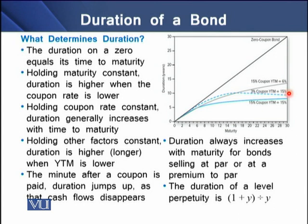Holding other factors constant, duration is higher when YTM is lower, as seen in the diagram where the bond with 6% YTM has a much higher duration than the other two bonds. Just after a coupon is paid, duration jumps as those cash flows disappear, which is also visible in the diagram. Duration always increases with maturity for bonds selling at par or at a premium to par. Finally, the duration of a level perpetuity is (1 + Y) / Y.